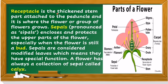The receptacle is the thickened stem part attached to the peduncle, and it is where the flower or group of flowers grows. Sepals enclose and protect the upper parts of the flower, especially when the flower is still a bud. Sepals are considered modified leaves, which means they have a special function. A flower always has a collection of sepals called the calyx.